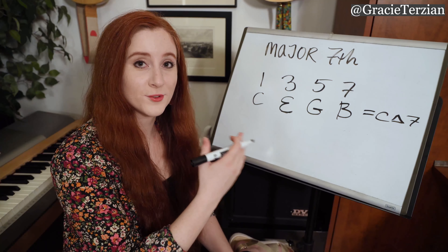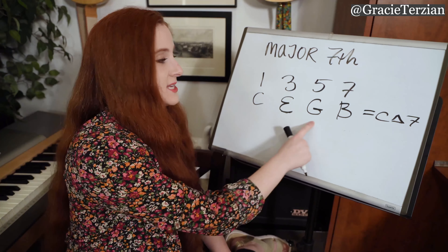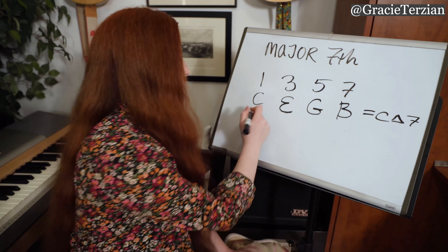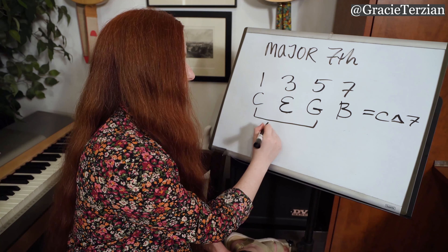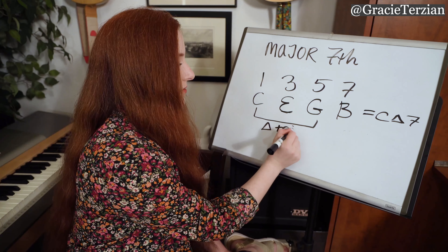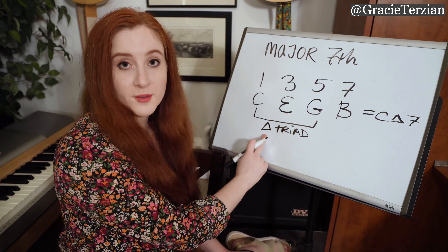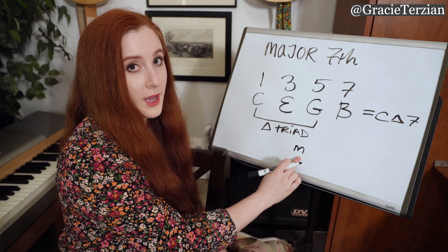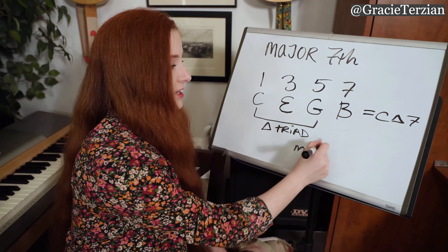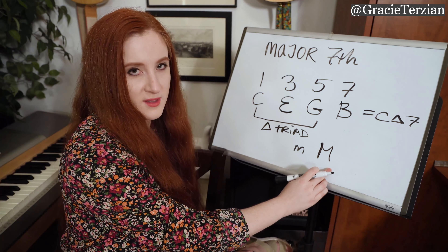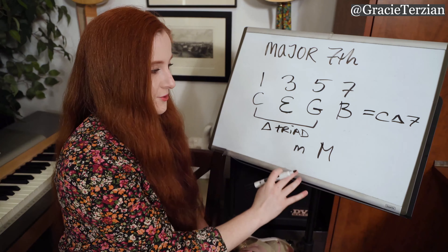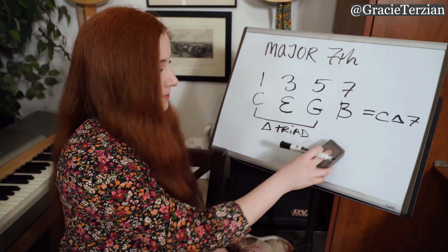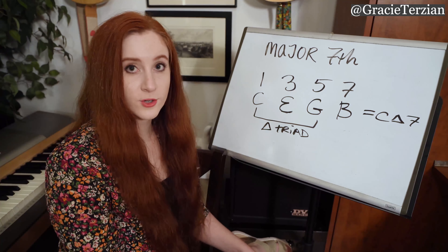Now let's analyze the intervals within this chord. If I play the notes C, E, and G, I would just be playing a regular old C major chord — that's just a major triad. In this video, I'm going to use the triangle symbol for major and a lowercase M for minor, just to keep it easier to read. So C, E, and G — that's a major triad.